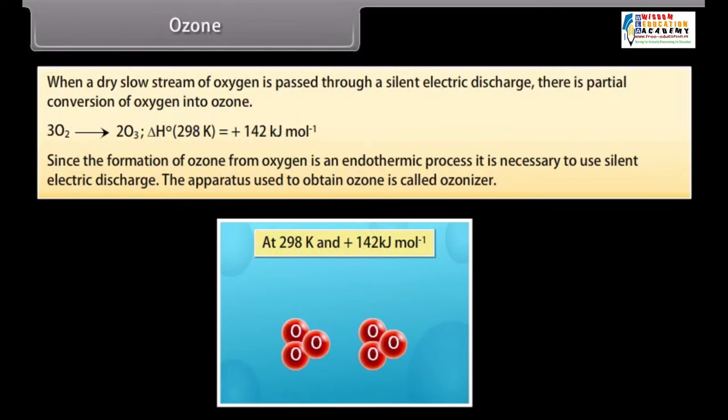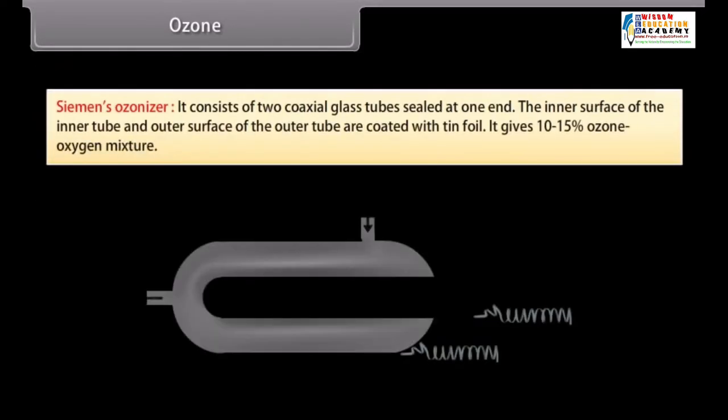The apparatus used to obtain ozone is called Ozonizer. Siemens Ozonizer consists of two coaxial glass tubes sealed at one end. The inner surface of the inner tube and outer surface of the outer tube are coated with tinfoil. It gives 10-15% ozone-oxygen mixture.